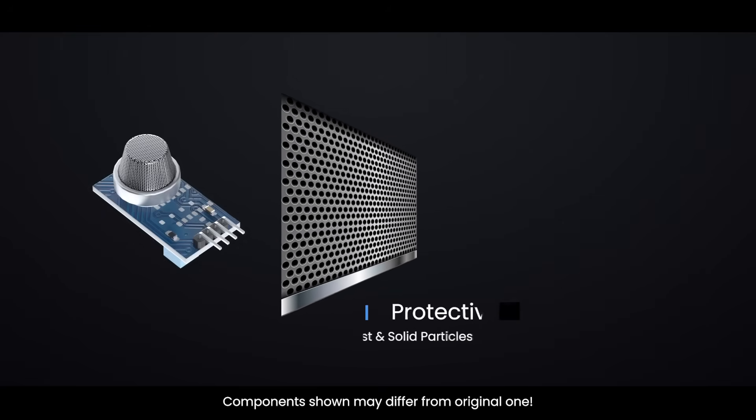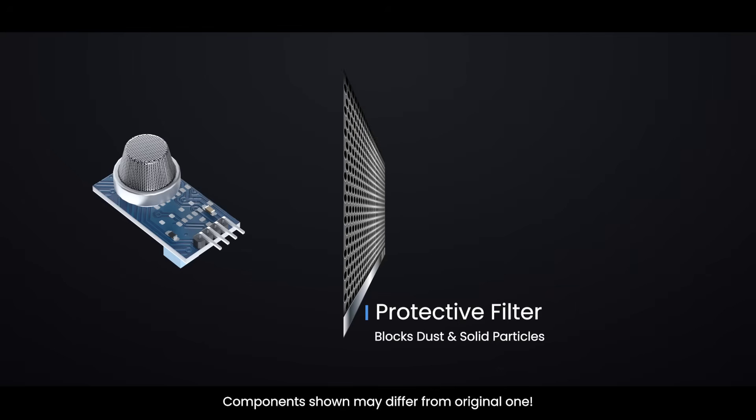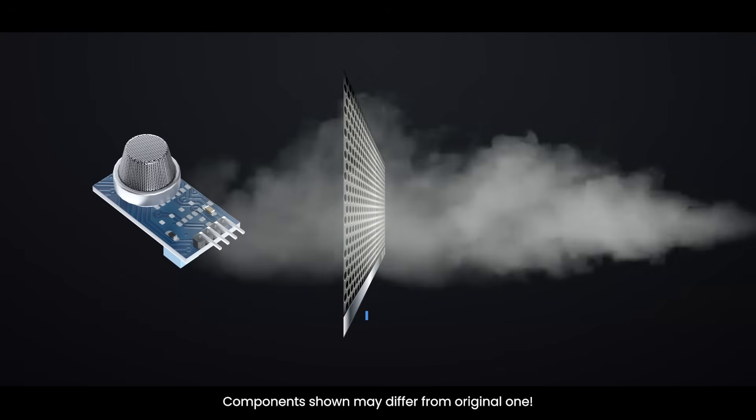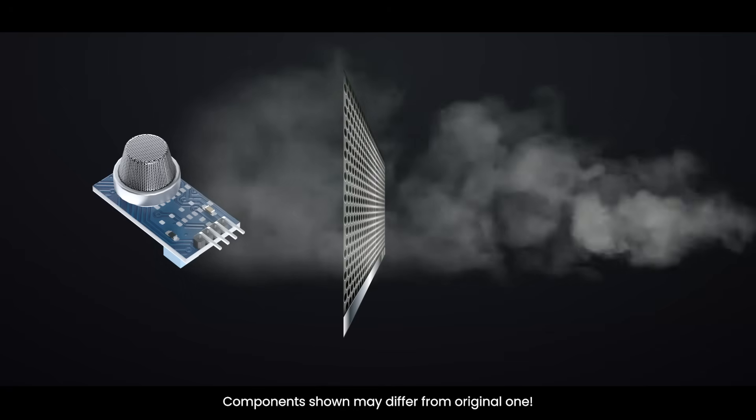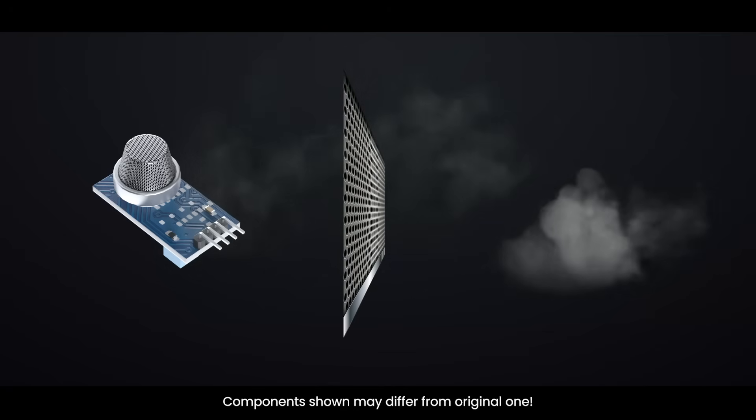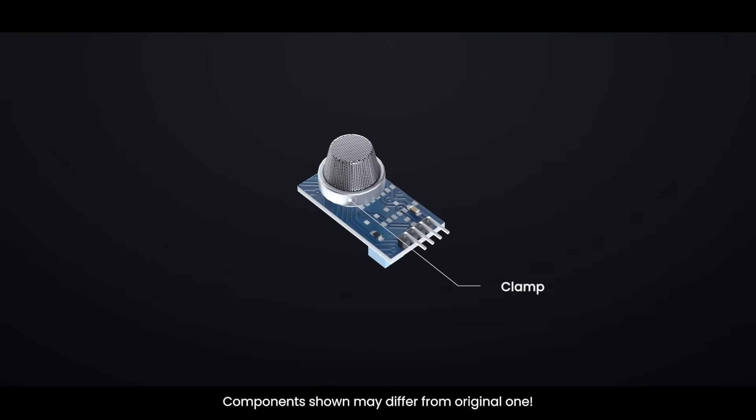This mesh prevents the heater inside the sensor from causing a fire or explosion if flammable gases are present. Besides providing safety, this mesh also acts as a protective filter. It blocks dust and solid particles from entering, allowing only gases to pass through to the sensing area. The mesh is held firmly in place by a copper-plated ring.